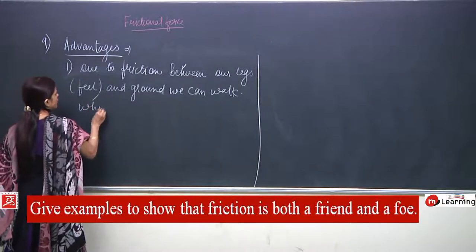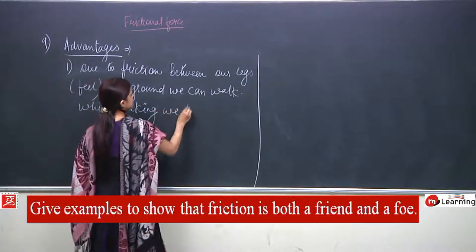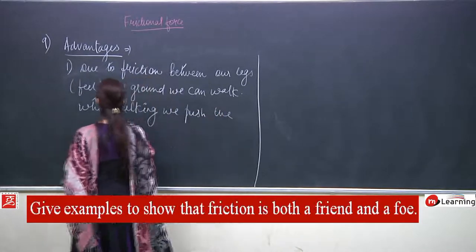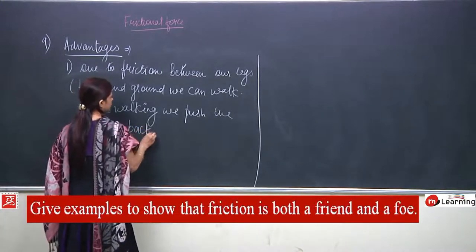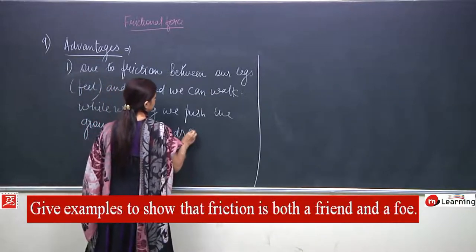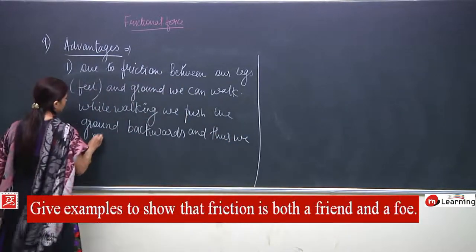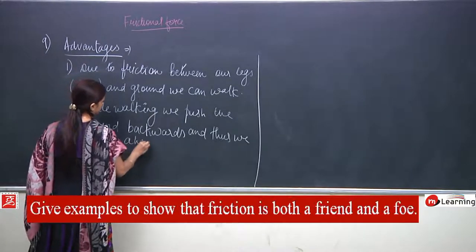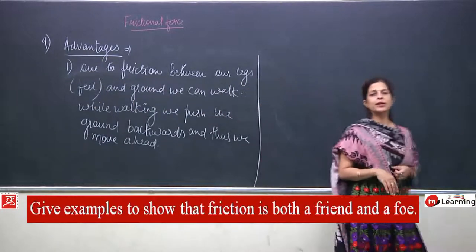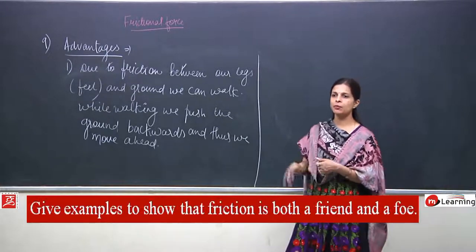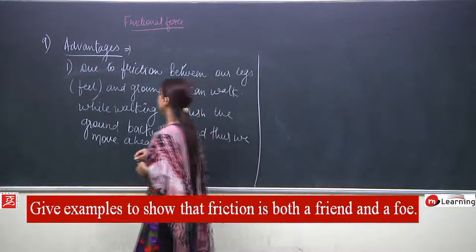While walking, what we actually do is push the ground backwards, and thus we move ahead. In case friction is not there, we will keep sliding in one place — we would keep pushing the ground but would not be able to move forward because friction is not there. So that is our first advantage point.